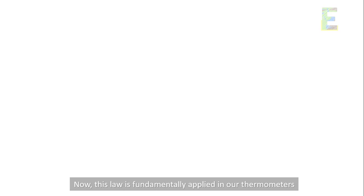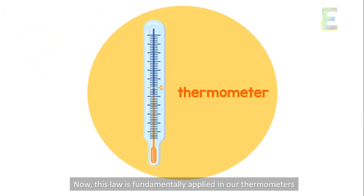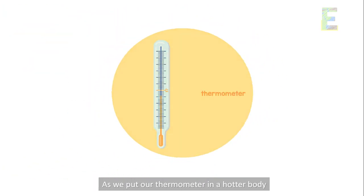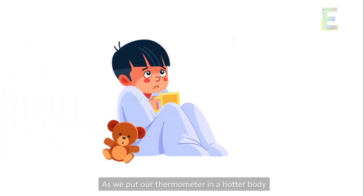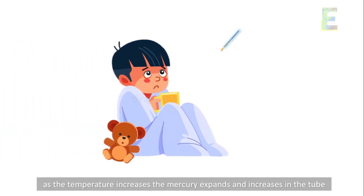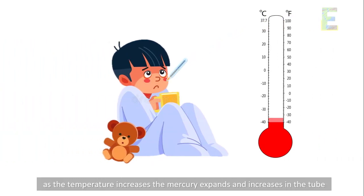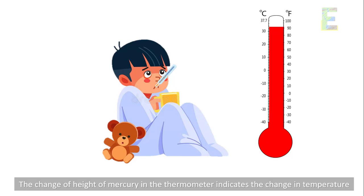Now, this law is fundamentally applied in our thermometers. As we put our thermometer in a hotter body and the temperature increases, the mercury expands and increases in the tube. The change of height of mercury in the thermometer indicates the change in temperature.